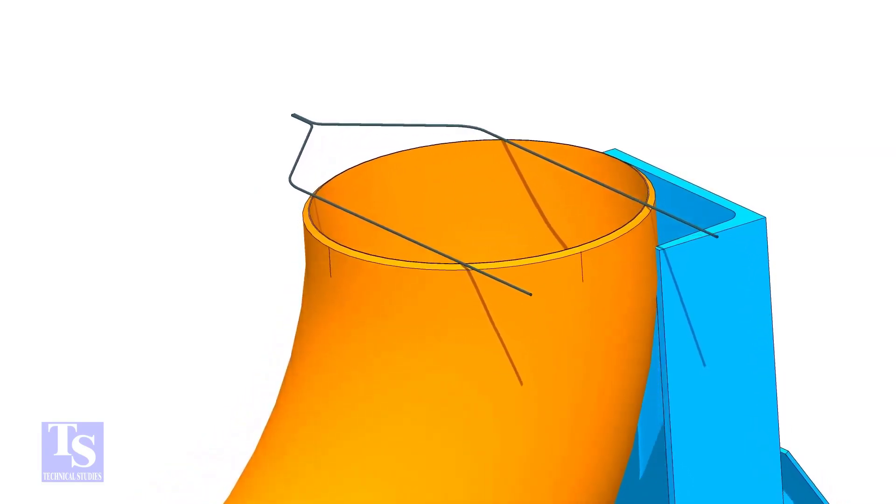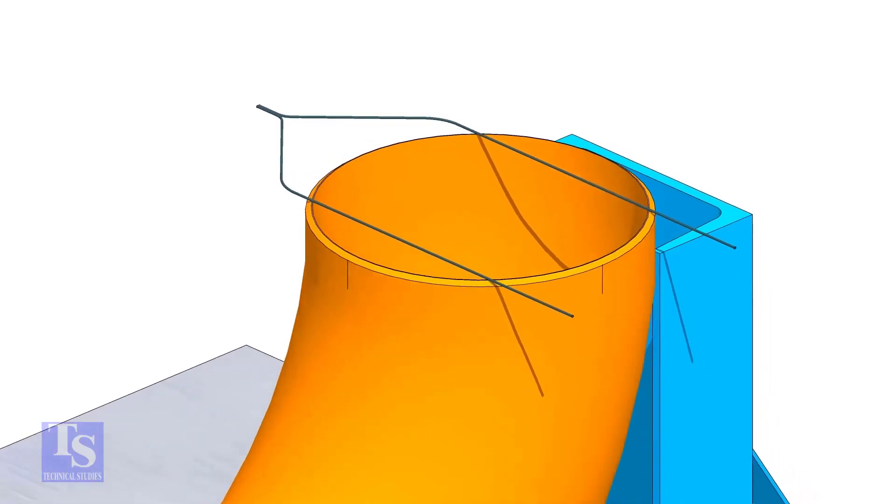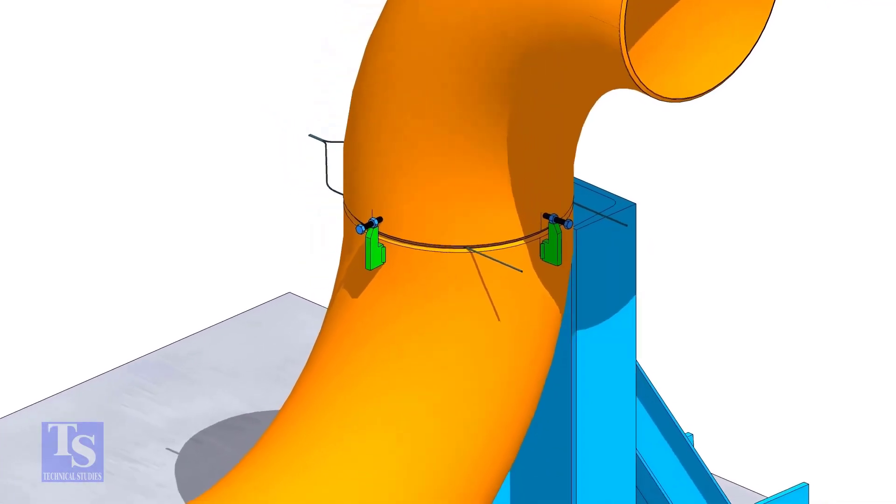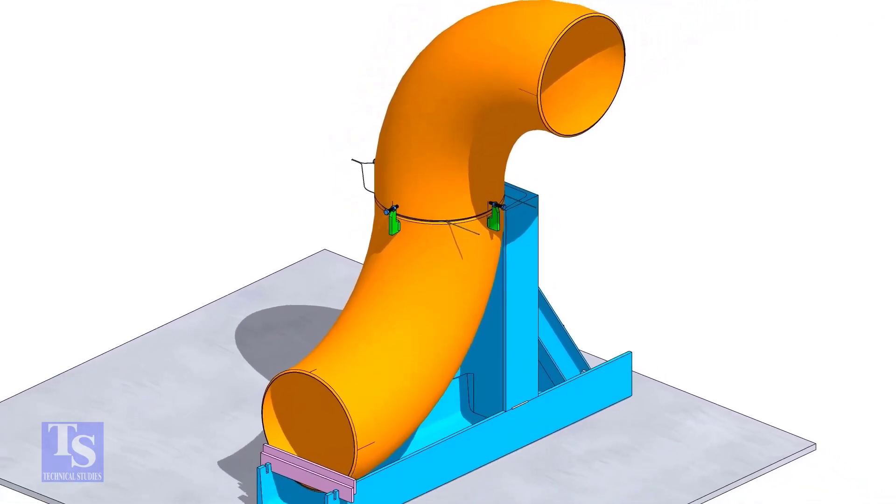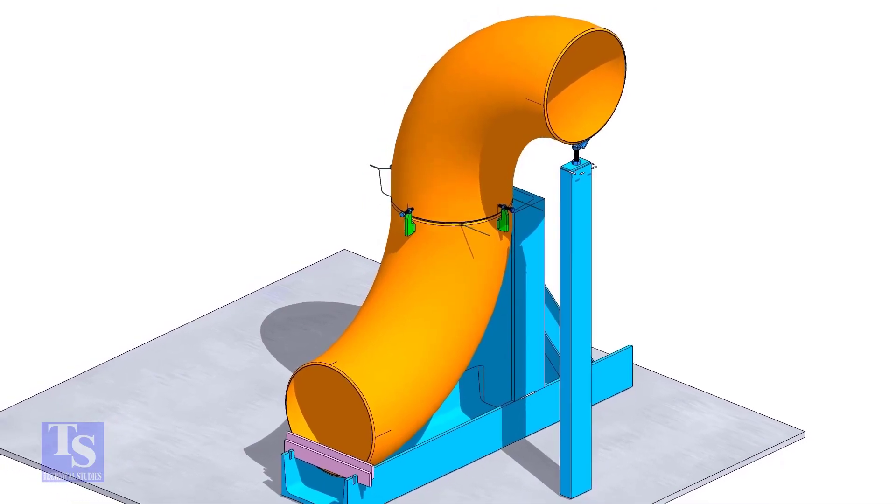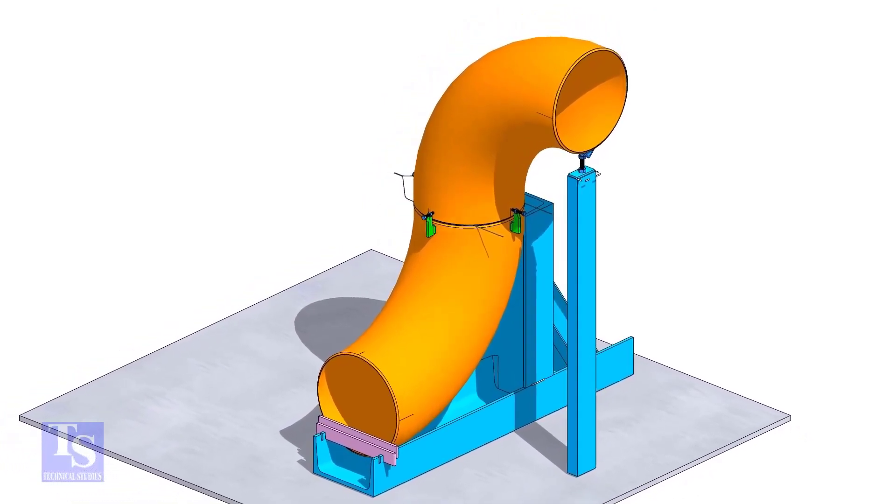Put the gap rod on the top face and tack weld four numbers jack bolts as shown. Put the other elbow and match the center lines in which direction you want to rotate the elbow. Tack weld an adjustable support below this elbow and adjust the height.